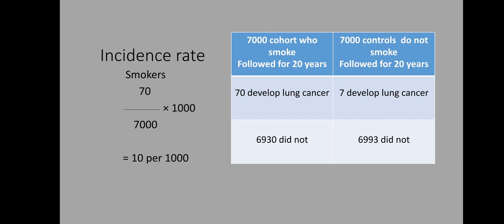The cohort is followed up for 20 years. After 20 years, it was found that 70 of those smokers developed lung carcinoma while 6,930 did not. To calculate the incidence rate among smokers, the number of new cases (70) is divided by the total population at risk (7,000) and multiplied by 1,000. The answer is 10 per 1,000.